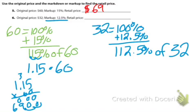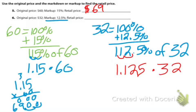So change this to a decimal, 1.125 times 32. 1.125 times 32 gives us 36. The answer, number 6, is $36.